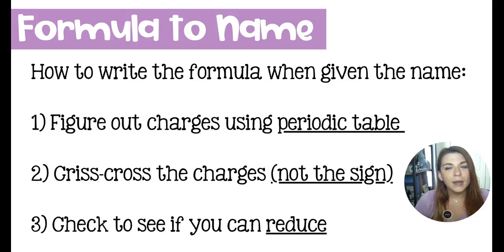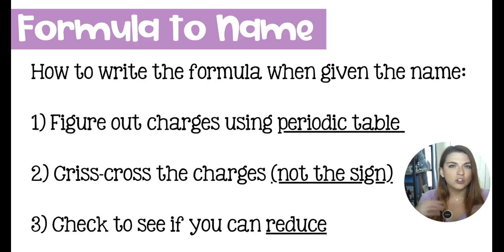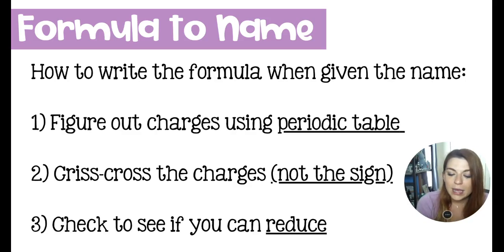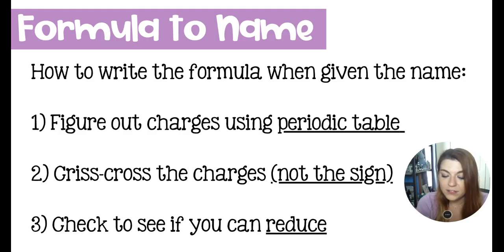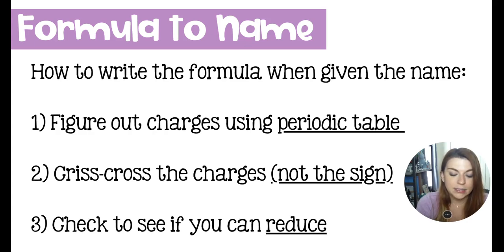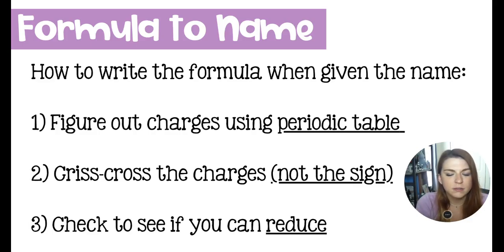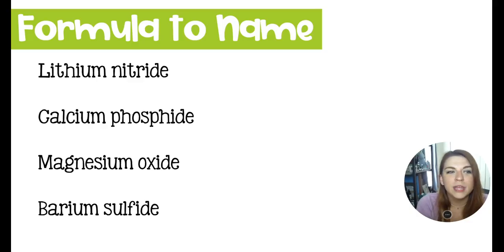Other times we have a chemical formula and need to determine its name. For a binary ionic compound, we look at the elements and figure out charges using the periodic table. Group 1 has a +1 charge, group 2 is +2. Non-metals: group 17 is −1, group 16 is −2, group 15 is −3. Group 18 doesn't bond — charge is zero. Then you crisscross the charges — don't carry the sign, just the numbers — and check if you can reduce.